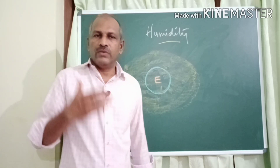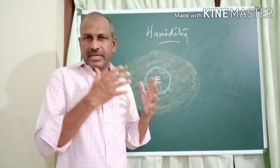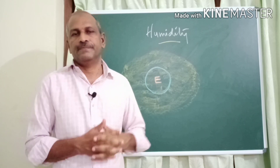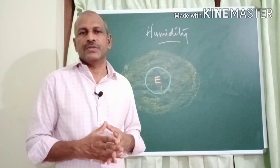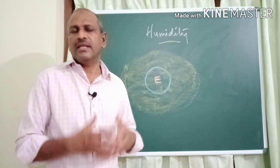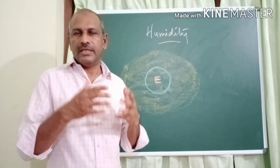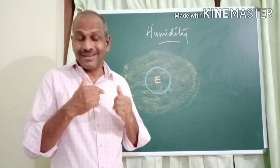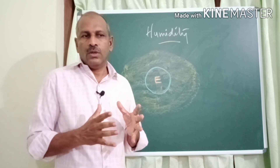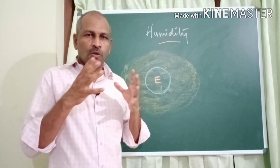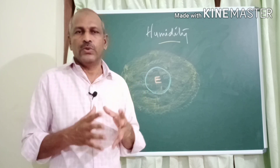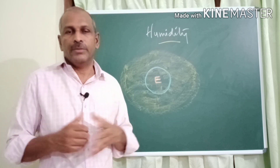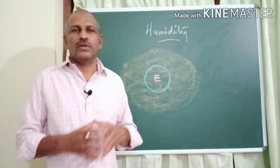In the last class we learned that atmospheric temperature varies with place to place and season to season. These fluctuations and variations in atmospheric temperature lead to a number of atmospheric phenomena like wind, pressure, precipitation, condensation, and clouds. Water content or water vapor present in the atmosphere also plays a significant role in influencing atmospheric phenomena. The water content in the atmosphere is called humidity.